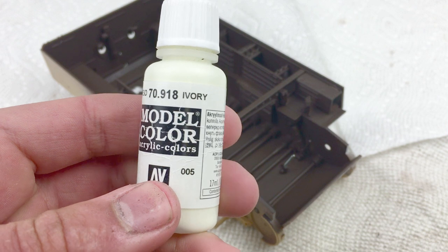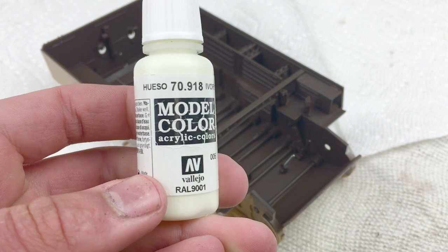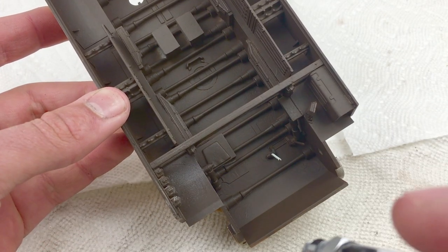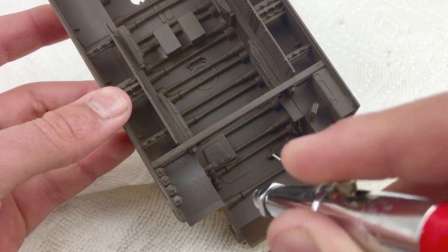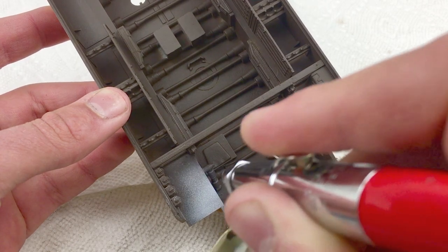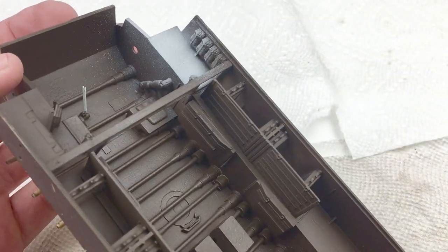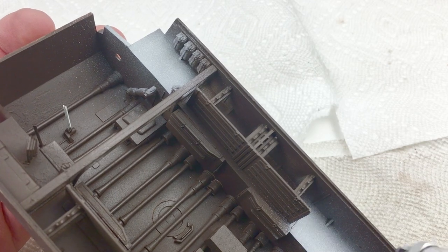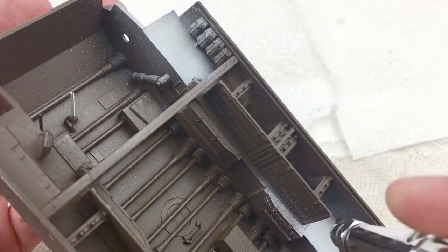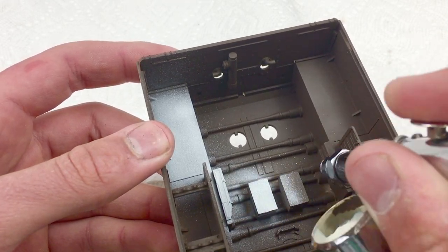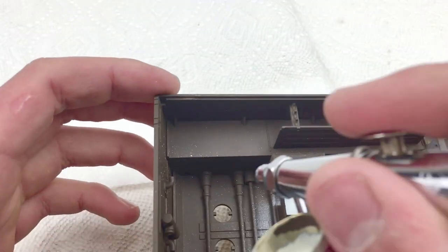For the interior, I'm going to use Model Master Ivory. I thinned it in about a 25% paint to 75% water mixture, so I can achieve a very thin, but still continuous layer. And as you can probably see, I'm going to apply it in a thin layer, building it up slowly.